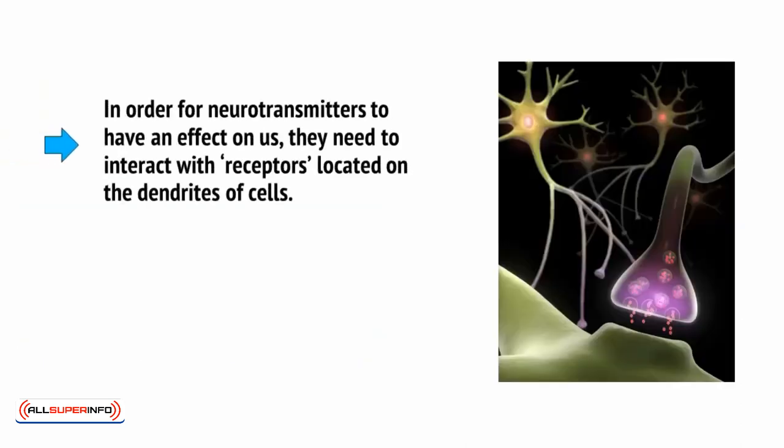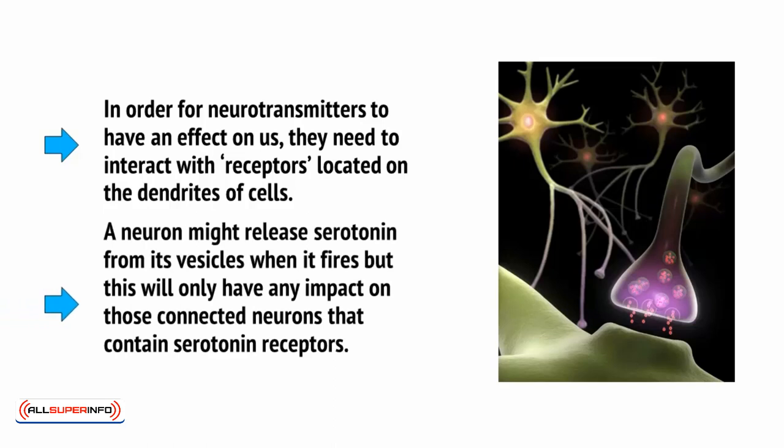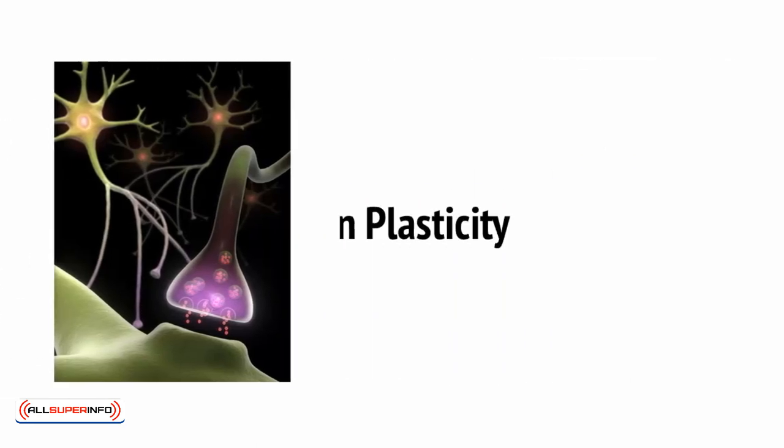In order for neurotransmitters to have an effect on us, they need to interact with receptors located on the dendrites of cells. In other words, a neuron might release serotonin from its vesicles when it fires, but this will only have any impact on those connecting neurons that contain serotonin receptors.